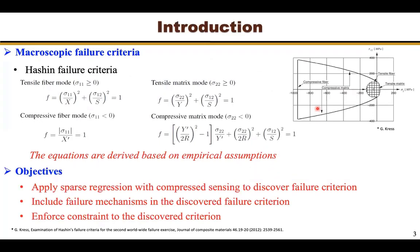The macroscopic failure criteria incorporate distinct failure mechanisms to form a phenomenological model. For example, Hashin failure criterion is one of the most popular phenomenological models in engineering practice. Hashin divided the failure into four failure modes, namely tensile or compressive fiber mode and tensile or compressive matrix mode. Hashin formulated his criteria in terms of the first four stress invariants with respect to the rotation about the fiber direction. However, the selection of these invariants is empirical — there is no rigorous physics behind that.